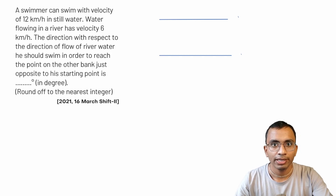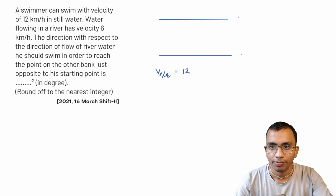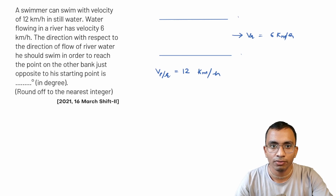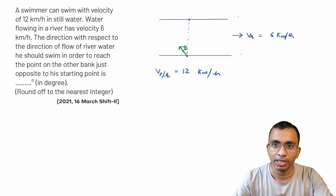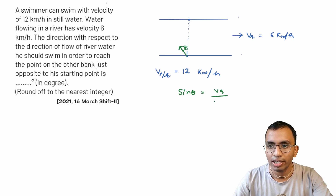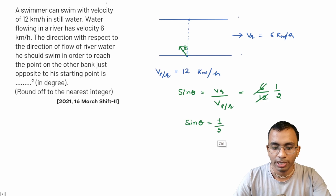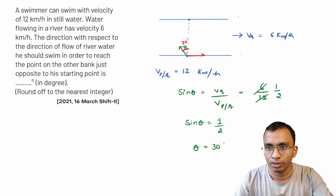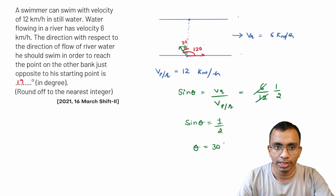Example: A swimmer can swim at 12 km/h in still water (velocity of person w.r.t. river = 12 km/h). River velocity = 6 km/h. sin θ = 6/12 = 1/2, so θ = 30°. Since the angle is measured with respect to the direction of flow of water, the total angle = 90° + 30° = 120°. The swimmer should swim at 120° to the direction of river flow.